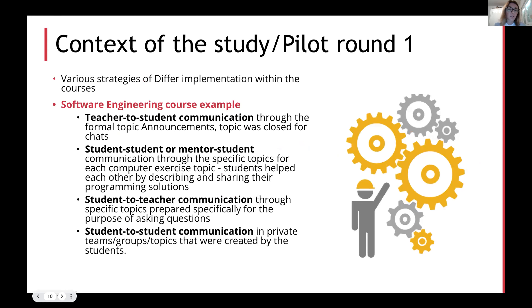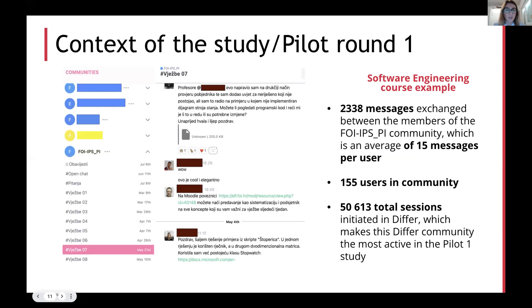I will now explain how communication worked in the software engineering course. It was a very vivid community, with all four ways of communication present. In the next slide, you can see how many interactions were initiated — a total of 50,000 sessions were initiated in Differ. We had approximately 150 users in the community and in total over 2,000 messages were exchanged. A teacher every week posted some topic about exercises or something that was on the schedule for that week.